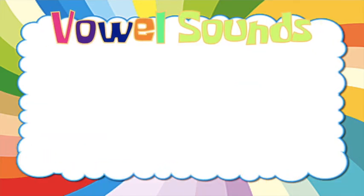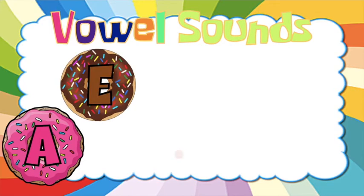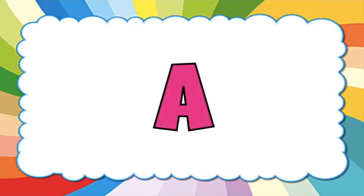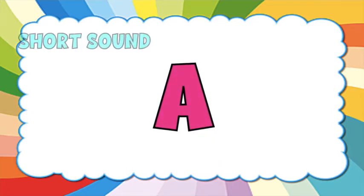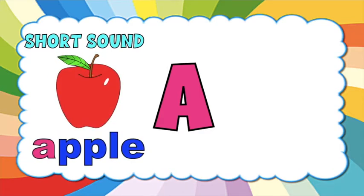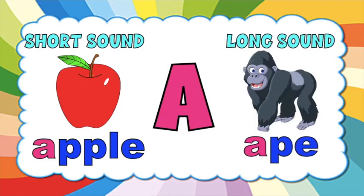Let's take a look at the vowel sounds: A, E, I, O, U. Let's have first A. A has a short sound. The short sound for A is /a/, like apple. The long sound for A is like its own name, A — like ape.